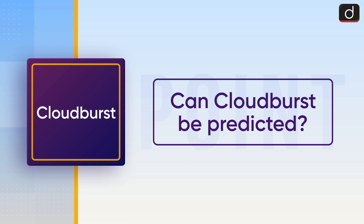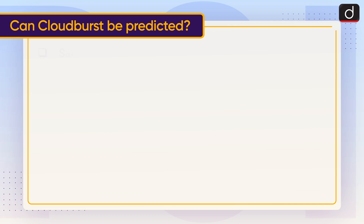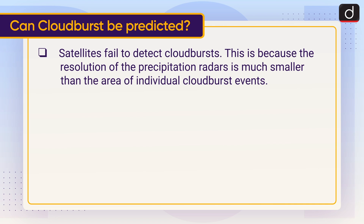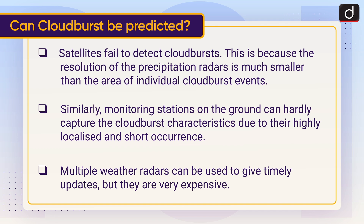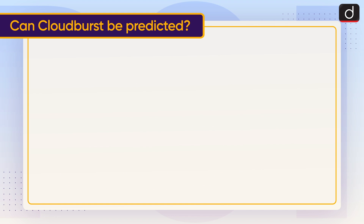Now let's understand: can cloudbursts be predicted? Satellites fail to detect cloudbursts because the resolution of precipitation radars is much smaller than the area of individual cloudburst events. Similarly, monitoring stations on the ground can hardly capture cloudburst characteristics due to their highly localized and short occurrence.